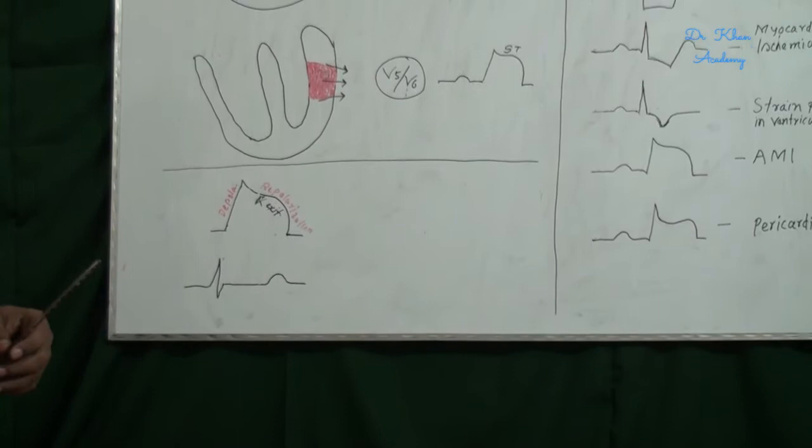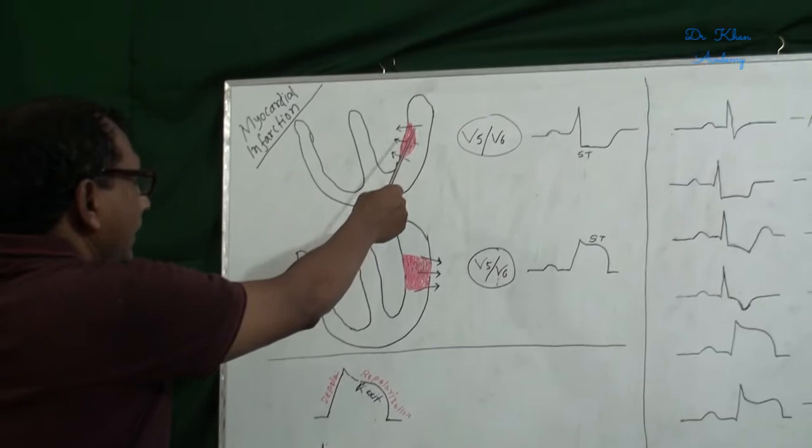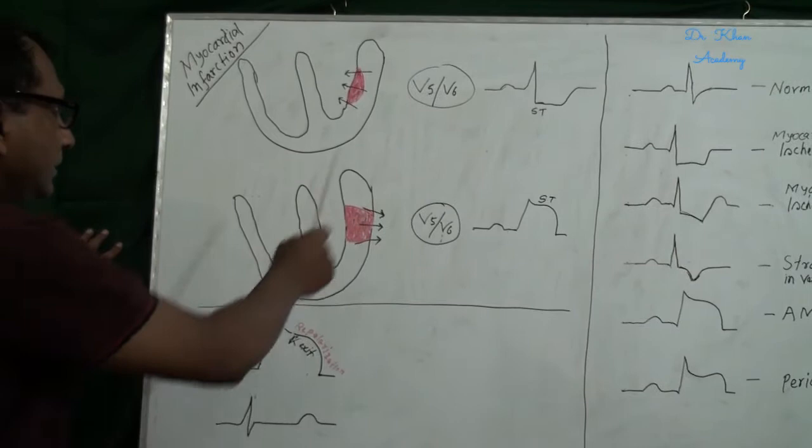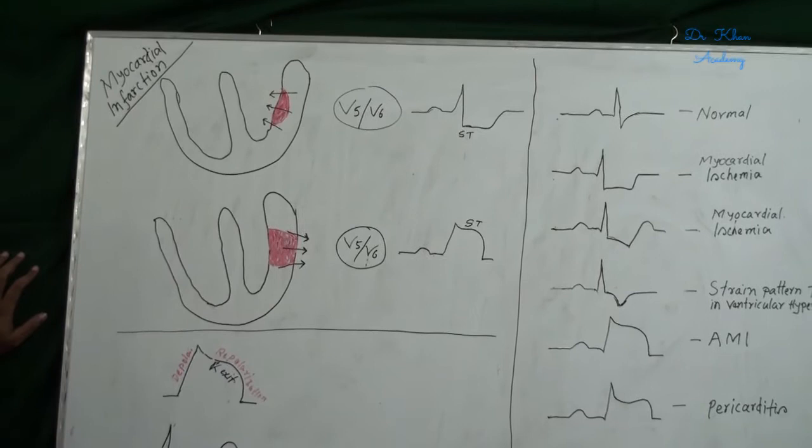When sub-endocardial injury occurs, current flow or impulse flow from the normal tissue to the cavity, that is away from the chest lead V5 or V6. This chest lead shows the ST segment depressions.